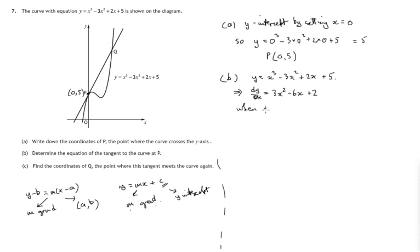So when x equals 0, the gradient dy by dx is 3 times 0 squared minus 6 times 0 plus 2. So that's just 2. And it certainly looks a steep enough line for gradient 2, 1 along 2 up, 1 along 2 up. That's what the gradient of 2 means.